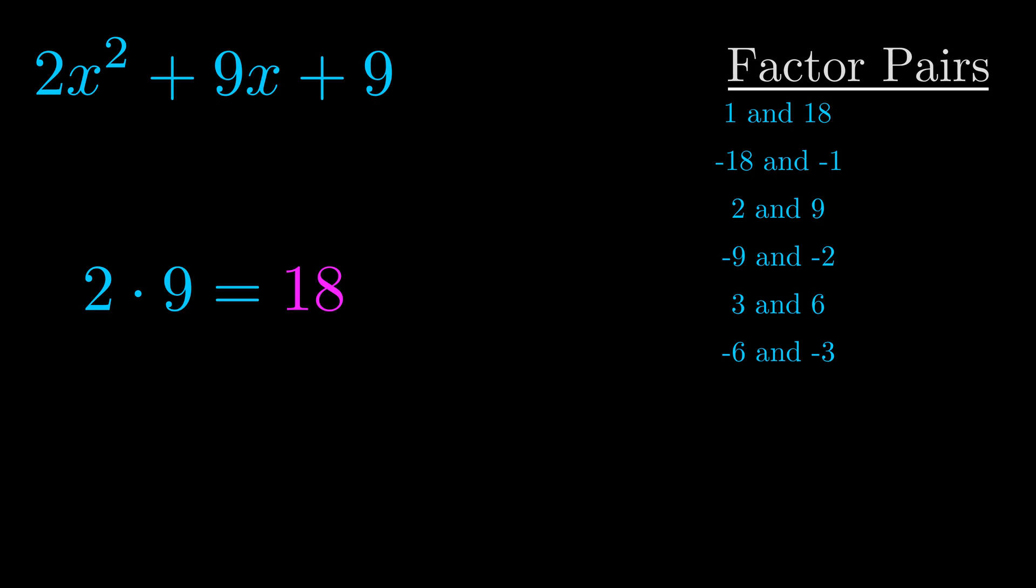The b value is the coefficient on the x term. That's the middle term, the one that we haven't done anything with yet. And really this is the only factor pair that we need.